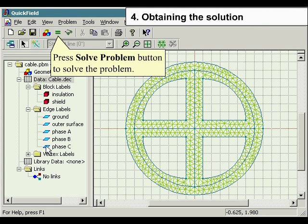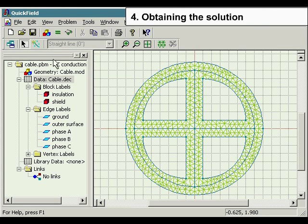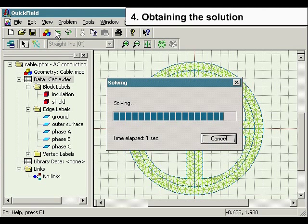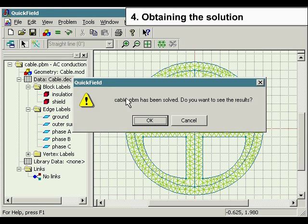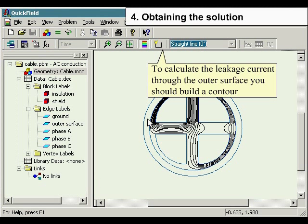Obtaining the solution. Press solve problem button to solve the problem. To calculate the leakage current through the outer surface, you should build a contour.